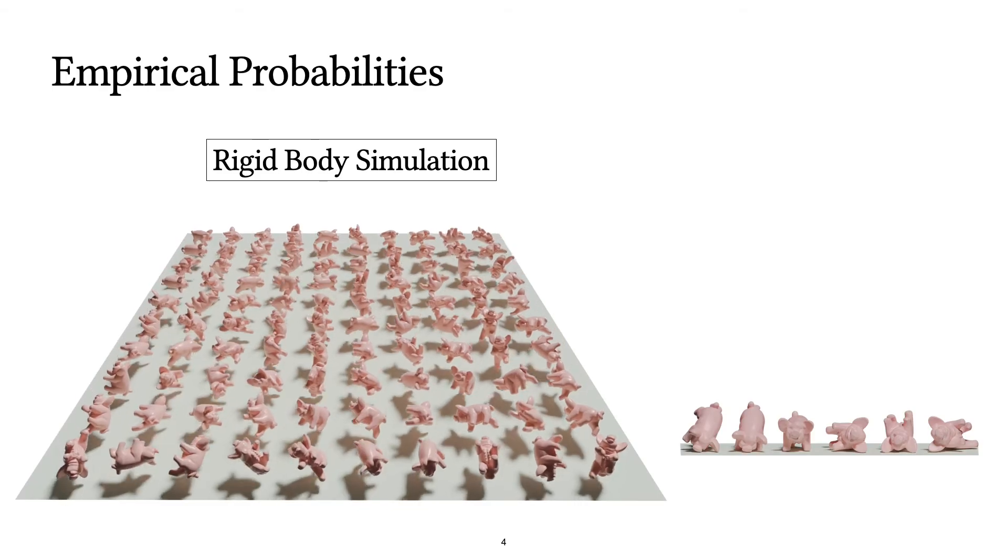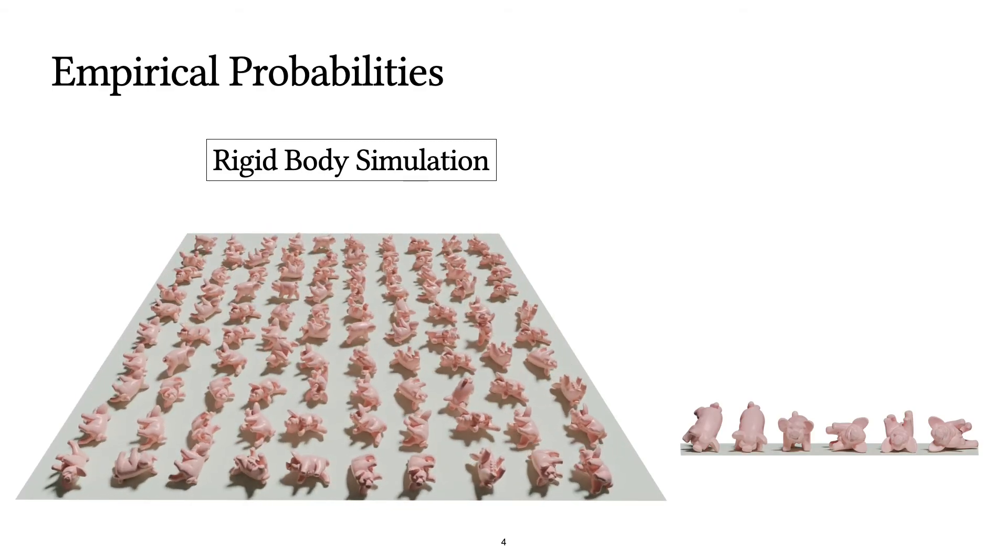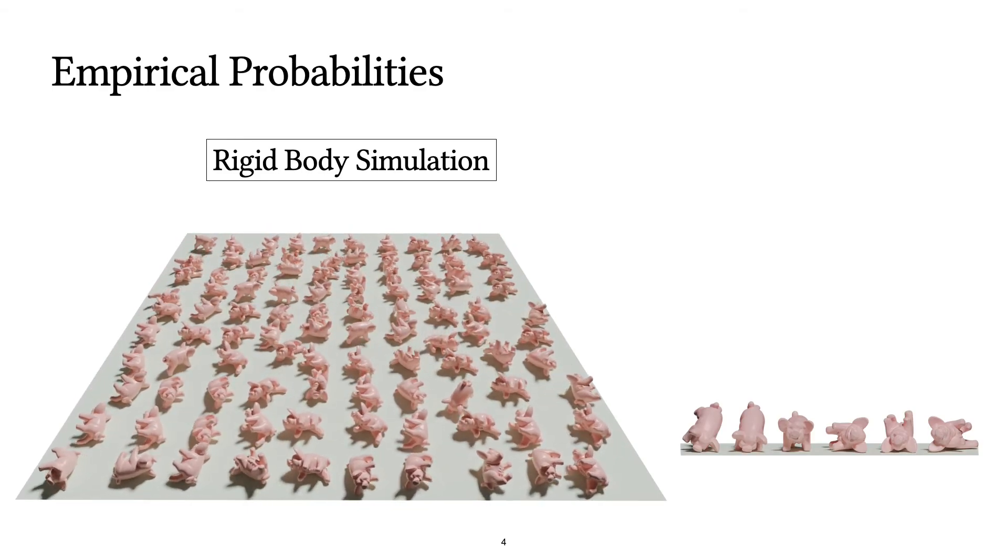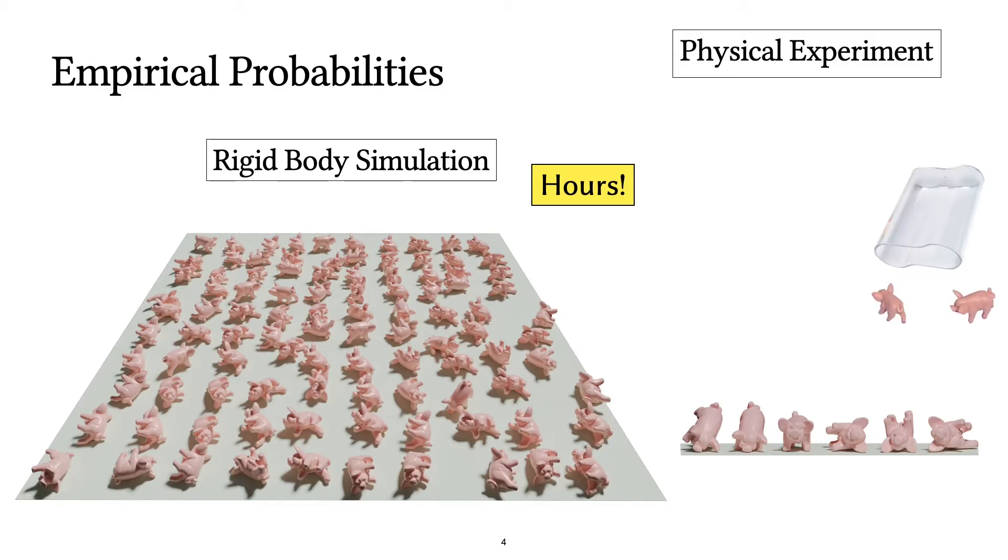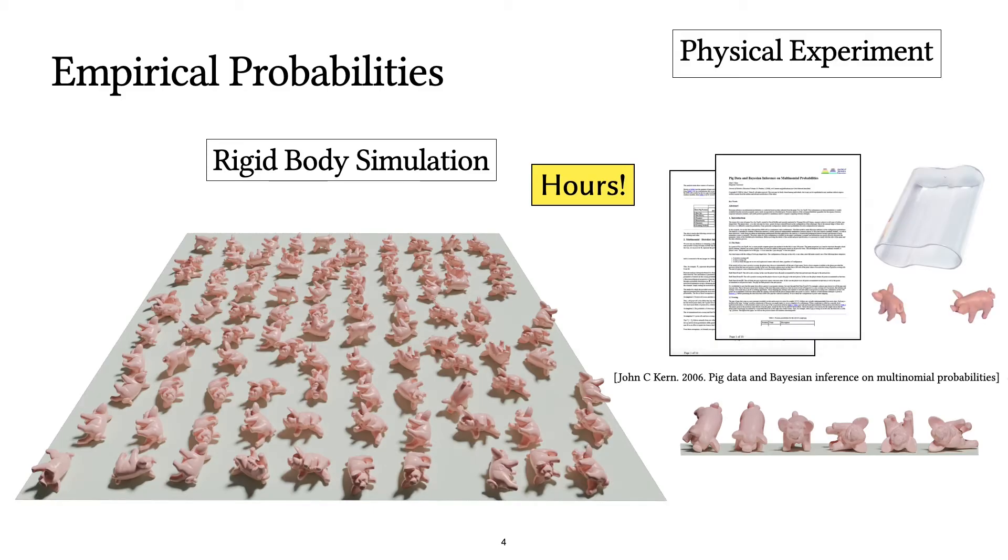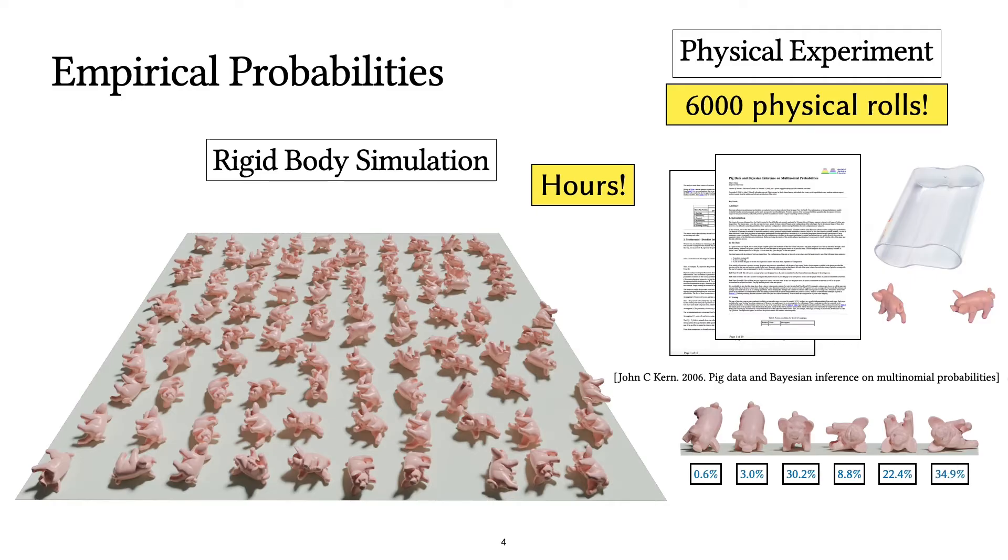You could take the empirical approach and try rolling it on the ground, say in a rigid body simulator and record the statistics, which could take up to hours in a modern and reliable simulator. You could also do physical experiments, which people have done in the past and recorded these statistics by doing 6000 physical rolls. You could imagine how long that could take.